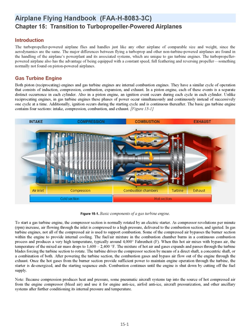The basic gas turbine engine contains four sections: intake, compression, combustion, and exhaust. To start a gas turbine engine, the compressor section is normally rotated by an electric starter. As compressor RPM increases, air flowing through the inlet is compressed to a high pressure, delivered to the combustion section, and ignited. In gas turbine engines, not all of the compressed air is used to support combustion; some bypasses the burner section to provide internal cooling. The fuel/air mixture in the combustion chamber burns in a continuous combustion process and produces a very high temperature, typically around 4,000 degrees Fahrenheit. When this hot air mixes with bypass air, the temperature drops to 1,600 to 2,400 degrees Fahrenheit. The mixture of hot air and gases expands and passes through the turbine blades, forcing the turbine section to rotate. The turbine drives the compressor section by means of a direct shaft, a concentric shaft, or a combination of both.